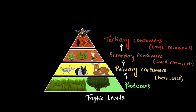They're called primary consumers because they eat the producers directly. Then you have secondary consumers — they get their food by eating the primary consumers. You can think of them as carnivores, but usually smaller carnivores in the sense that they are not at the top, since there are other animals that can eat them as well.